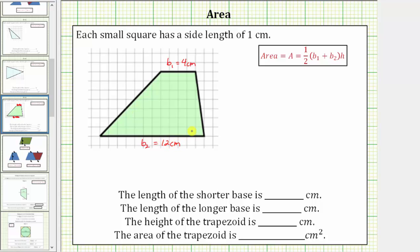The height of a trapezoid is the length between the two bases, which would be the length of this segment here. Notice how the height is seven centimeters. The length of the shorter base is four centimeters, the length of the longer base is twelve centimeters, and the height of the trapezoid is seven centimeters.